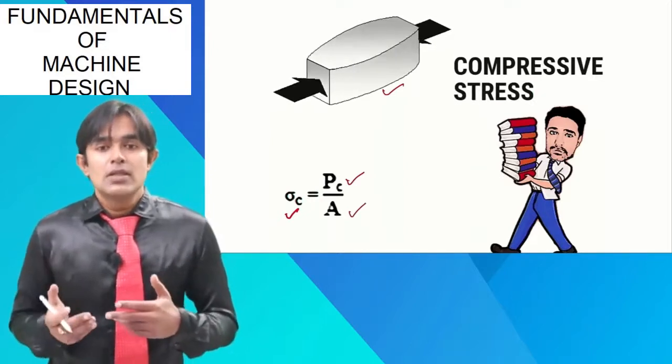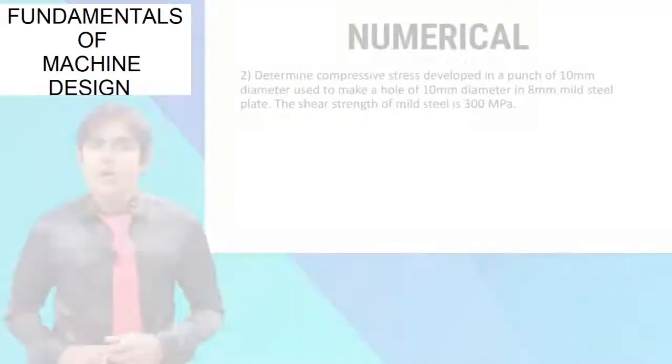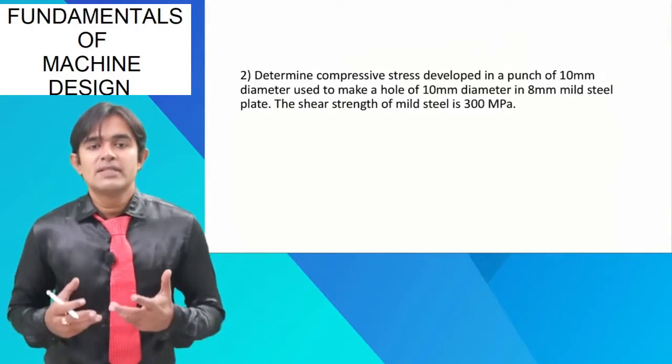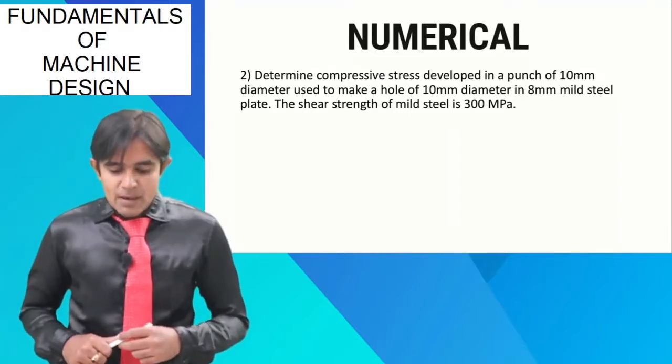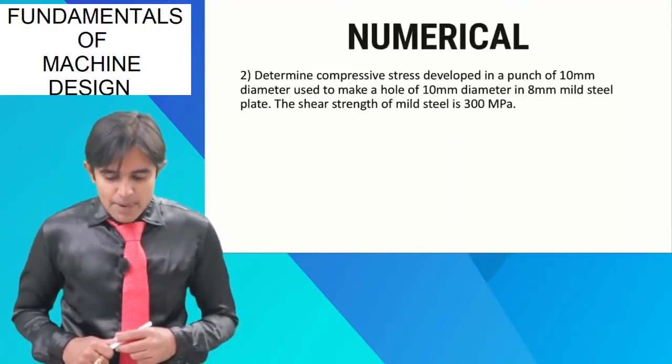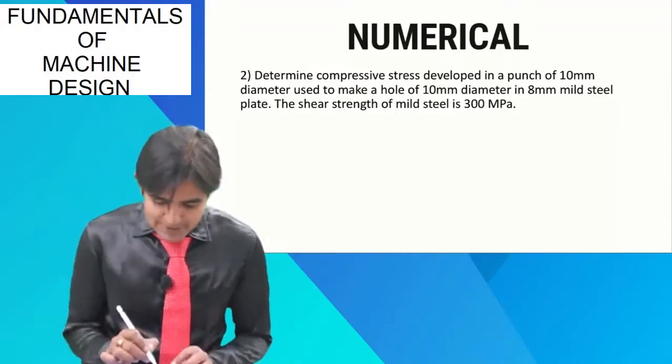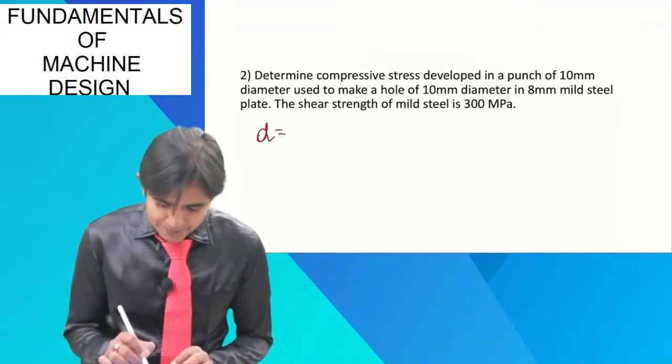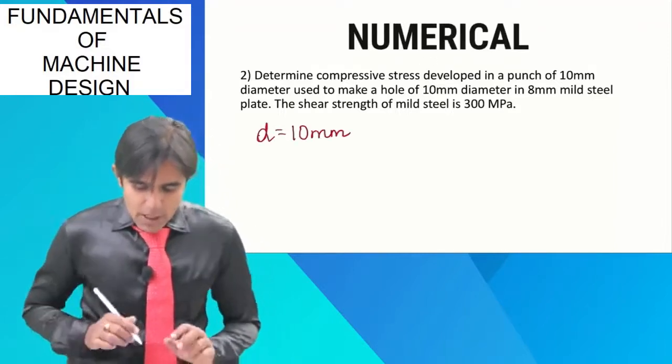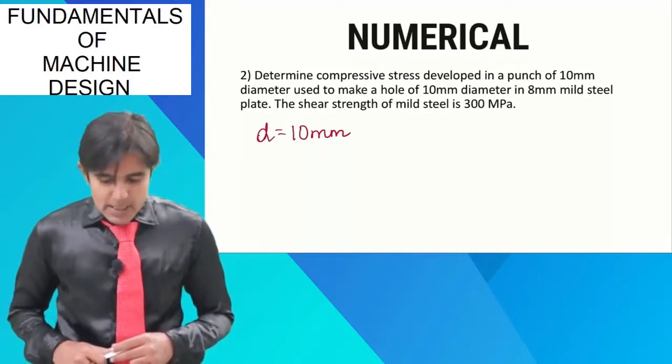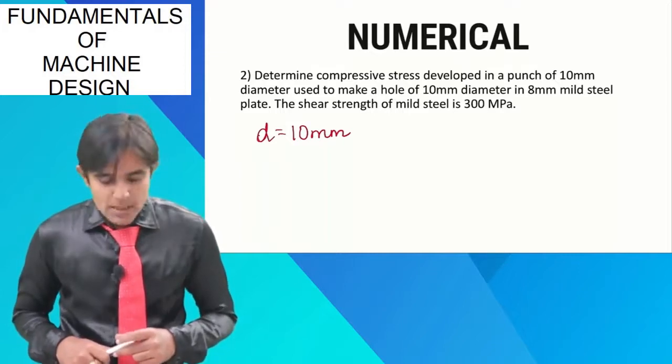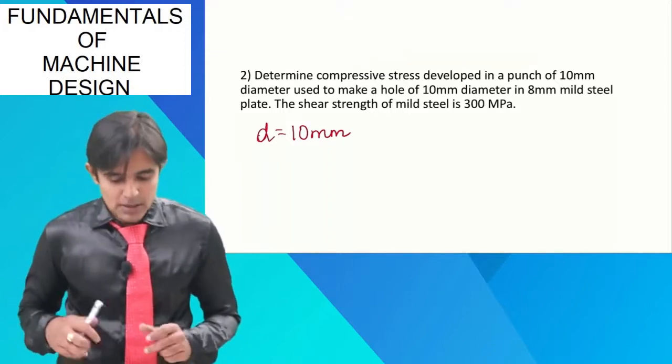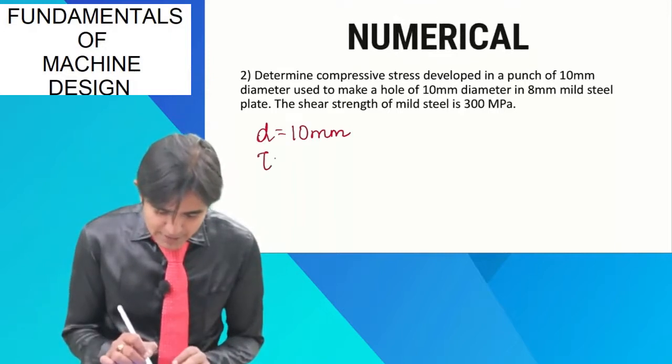Now, let us move further to the other type of stress. Now since we have talked about compressive stress, so let us solve one numerical on compressive stress. Now, determine the compressive stress developed in a punch of 10 mm diameter, so you can see diameter given is 10 mm, used to make a hole of 10 mm diameter in 8 mm mild steel plate. The shear strength of mild steel is 300 mega Pascal, so here, the shear strength given is 300 mega Pascal.